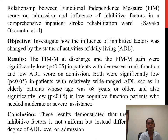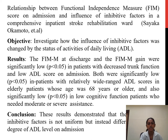Another study examined the relationship between Functional Independence Measure score on admission and the influence of inhibitor factors in a comprehensive inpatient stroke rehabilitation ward, conducted by Sayaka Okamoto et al. The objective was to investigate how the influence of inhibitor factors changed by status of activities of daily living. Results showed that FIM motor subscale at discharge and FIM motor gain were significantly low in patients with decreased trunk function and low ADL score on admission, in elderly patients aged 68 or older, and in patients with cognitive function needing moderate or severe assistance. The conclusion was that the influence of inhibitor factors differs according to the degree of ADL level at admission.